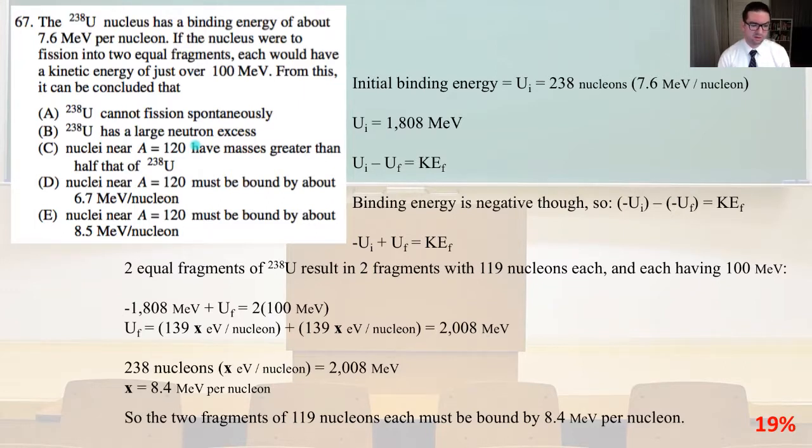So Uf equals 139 times eV per nucleon plus (139 times eV per nucleon) equals 2008 MeV. So 238 nucleons times the electron volts per nucleon equals 2008 MeV, and x equals 8.4 MeV per nucleon. So the two fragments of 119 nucleons each must be bound by 8.4 MeV per nucleon. And so that would be answer E.